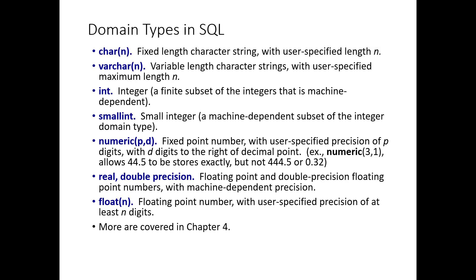Domain types in SQL are very important. Many people confuse CHAR(N) and VARCHAR(N). CHAR(N) is a fixed-length character string of user-specified length N — once you define size 10, that 10-block is fixed; you can use less but the unused space is wasted. VARCHAR(N) is a variable-length character string with user-specified maximum length N — if N is 100 and you use 20, the remaining 80 is free and available. Then there is INTEGER (INT), a finite machine-dependent subset of integers, and SMALLINT, also a machine-dependent subset.